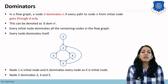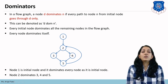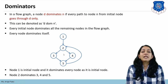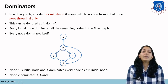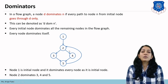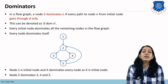To check if 2 dominates 5, we identify two paths from the starting node: 1→2→3→5 and 1→2→4→5. Both paths pass through node 2. Therefore, 2 dominates 5. So node 2 dominates nodes 3, 4, and 5.